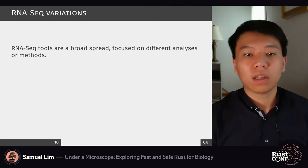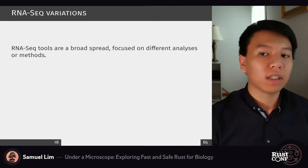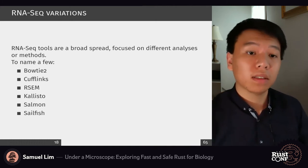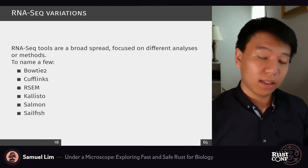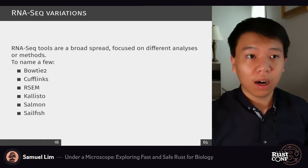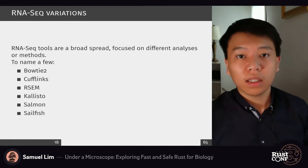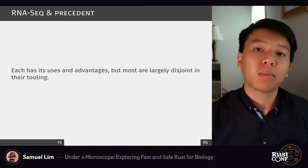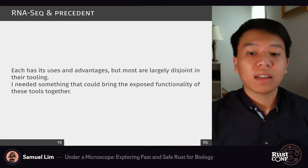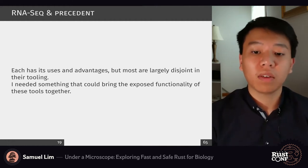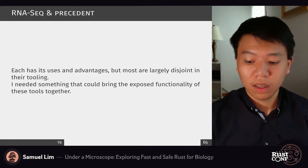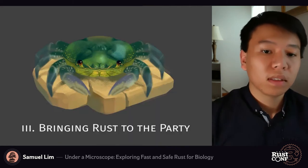RNA-seq tools are a broad spread — they can focus on many different analyses or methods. Some may handle quantification, categorization, and analysis of expression of different genes and RNA sequences. Each has its own uses and advantages, but most are largely disjoint in their programmatic tooling. We needed something that could bring the exposed functionality — command arguments, positional arguments, and the general CLI of these many different tools — into one unified surface. And that's where Rust comes in.